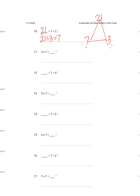Four times seven: seven, fourteen, twenty-one, twenty-eight. Twenty-eight. Commutative property: seven times four also equals twenty-eight. Twenty-eight divided by seven equals four. And twenty-eight divided by four equals seven.